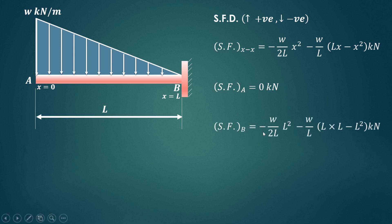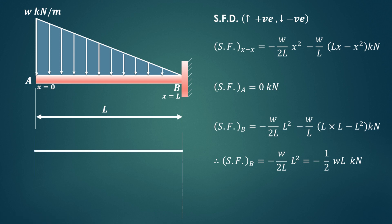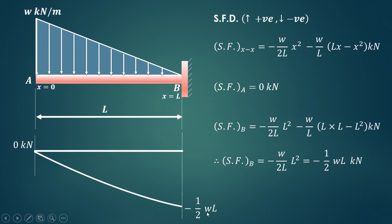For shear force at B, we substitute X equals L. So it is minus W upon 2L into L squared, giving minus WL/2, and the second term gives L squared minus L squared which is zero and cancels out. So the shear force at B is minus WL/2 kN. Drawing the diagram: at A it is 0, at B it is minus WL/2, and the curve is a second-degree parabola.